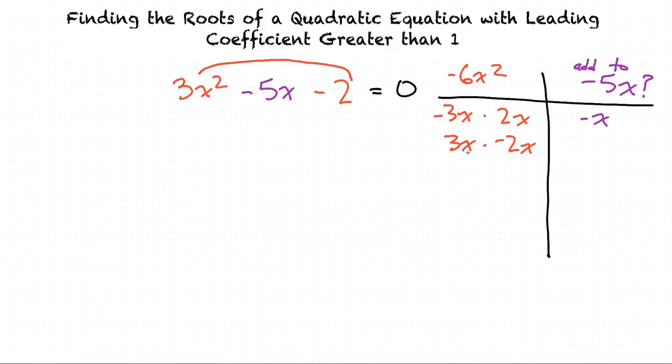We will now try -6x times x. -6x times x equals -6x². And -6x plus x does in fact equal -5x.